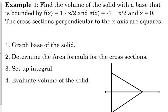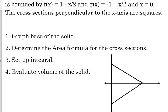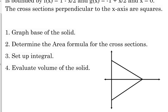All right, so let's look at a problem here. These are the equations that you were just using. Find the volume of the solid with the base that's bounded by 1 minus X over 2, negative 1 plus X over 2, and X equals 0. The cross-sections perpendicular to the X-axis are squares. So these are the steps you're always going to take. You're going to start by graphing your base so that you can get that visual. You've got to determine the area formula for the cross-sections. You've got to set up your integral, and then you're going to evaluate.